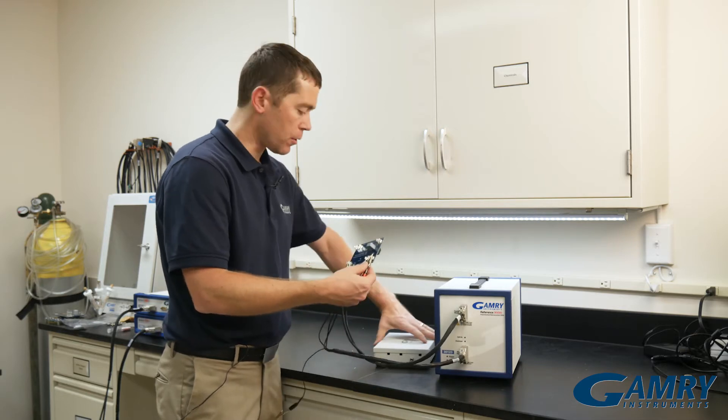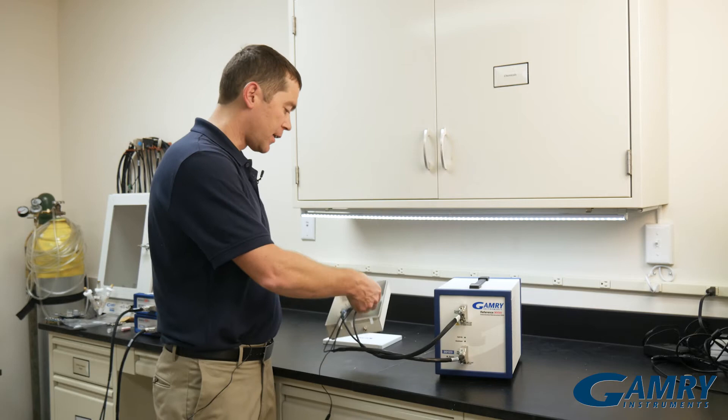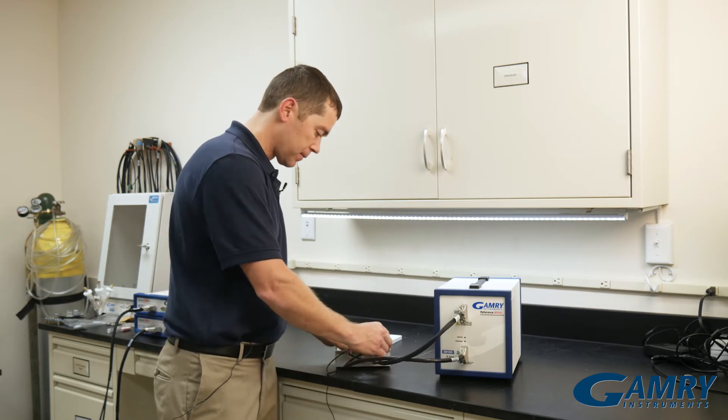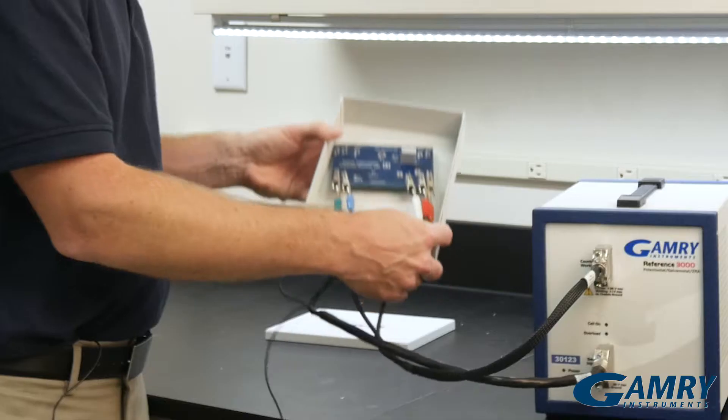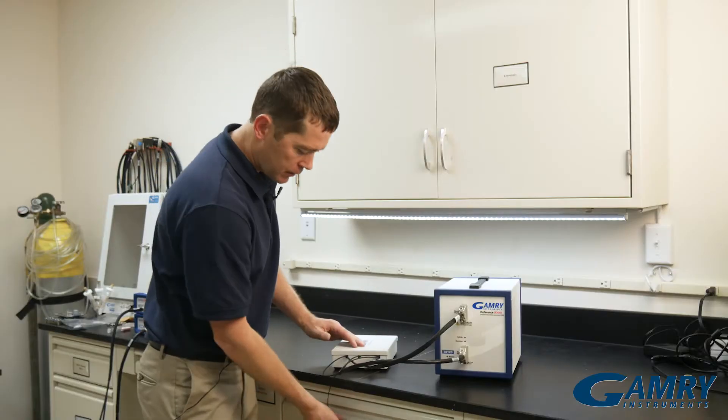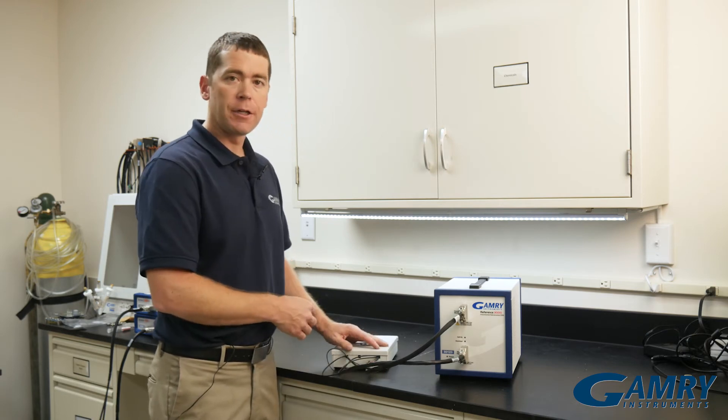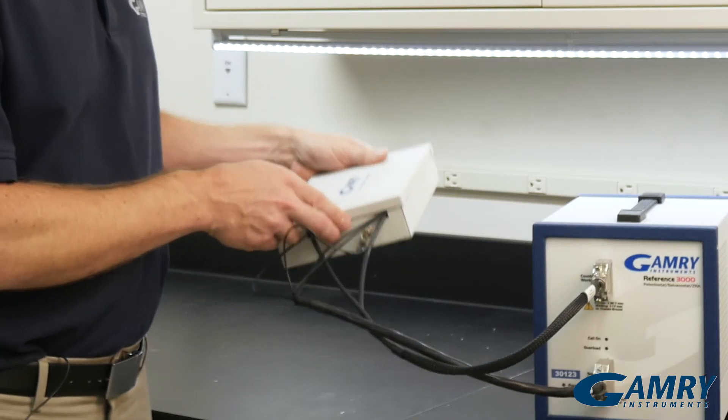Then we take our calibration board and put it inside our Faraday cage, our little calibration shield. We place it in there, we put the lid on it to complete the shielding, and then we take our floating ground and connect to the floating ground connection that you can see here.